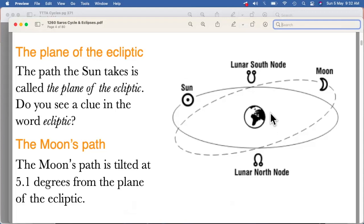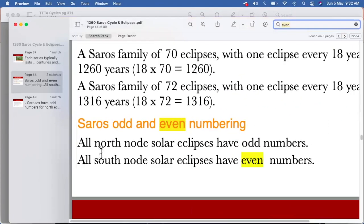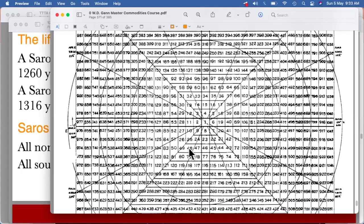This is the first and most important part. And the second and most interesting thing that we need to know is the Saros cycles are being numbered accordingly. So all north node solar eclipses have odd numbers, all south node eclipses have even numbers.